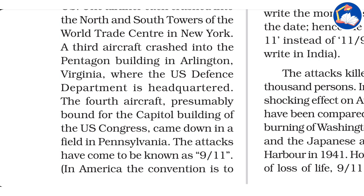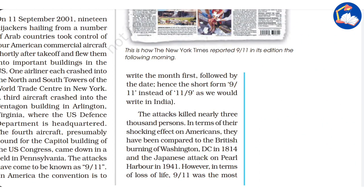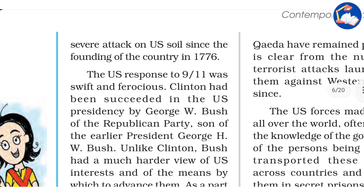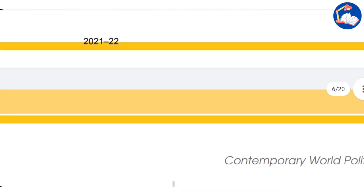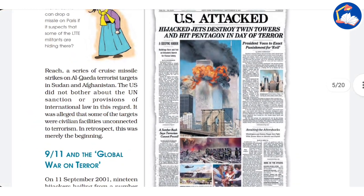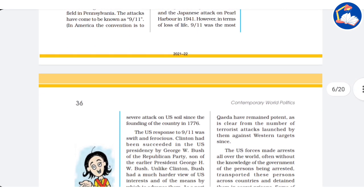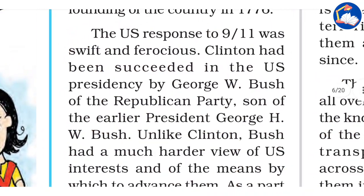The attacks came to be known as 9/11 because in US tradition, dates are written with the month first. The attacks killed nearly 3,000 people. In terms of their shocking effect on Americans, they have been compared to the British burning of Washington DC in 1814 and the Japanese attack on Pearl Harbor in 1941. However, in terms of loss of life, it was the most severe attack on US soil since the founding of the country in 1776.